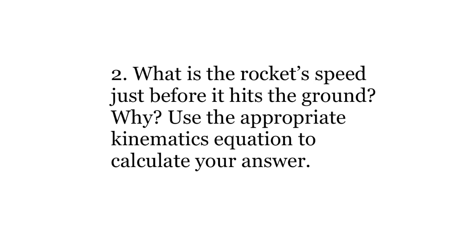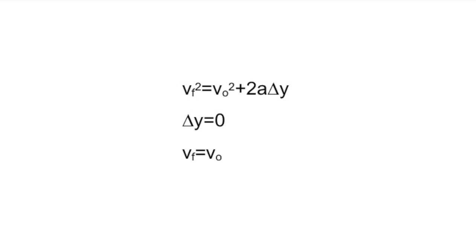Analysis question 2: What is the rocket's speed just before it hits the ground? Why? Use the appropriate kinematics equations to calculate your answer. The third kinematics equation bases displacement off change in velocity and acceleration. If displacement is equal to 0, the final velocity is equal to the initial velocity.